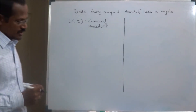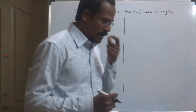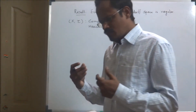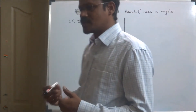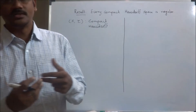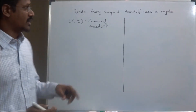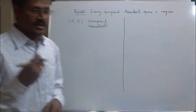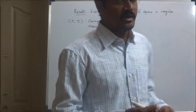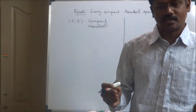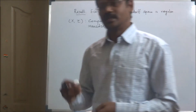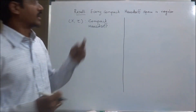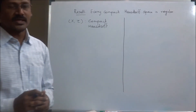In an earlier video we proved that a regular space implies a Hausdorff space, and a Hausdorff space implies a T1 space. So here, since we have assumed X is a Hausdorff space, it is a T1 space, which means that every singleton set is closed in X. So the first condition needed for X to be regular is now satisfied.